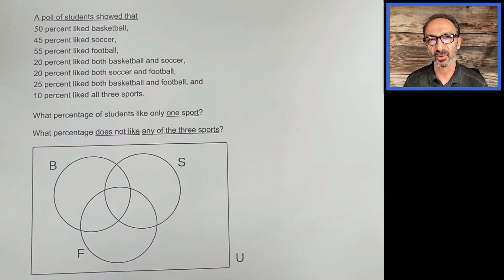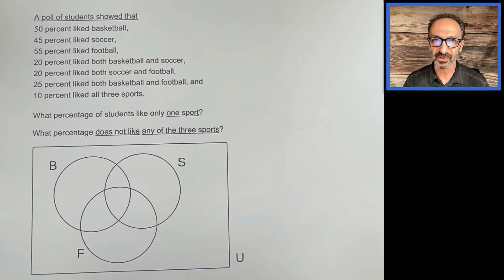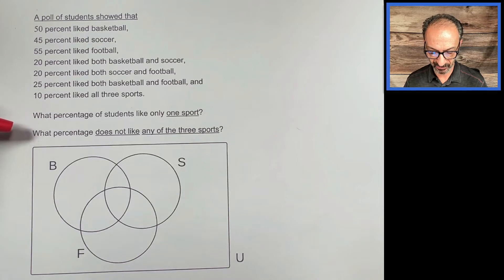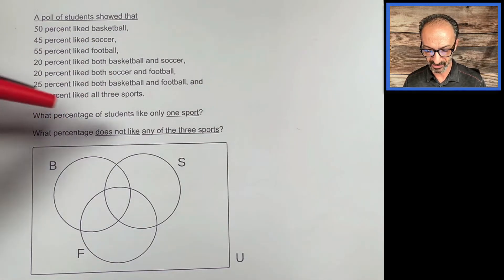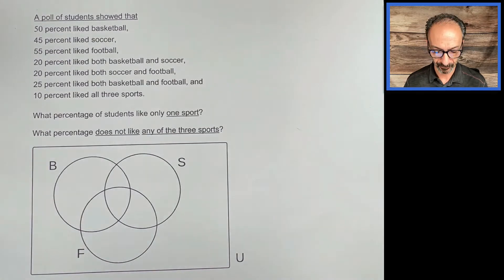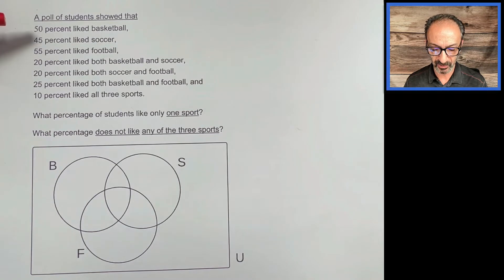Today I'm going to go over a Venn diagram problem with percents, which makes it easier to add. We have three sets as you can see in the graph. The idea is solving two questions: what percent of students like only one sport, and what percent does not like any of the three sports. We have to be careful about the way they are asking.